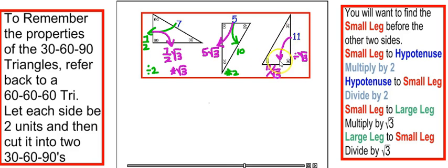But now we have the small leg, and we want the hypotenuse. All we have to do, if we have the small leg and we want the hypotenuse, is to multiply by 2. So then we get 2 times 11 over radical 3.